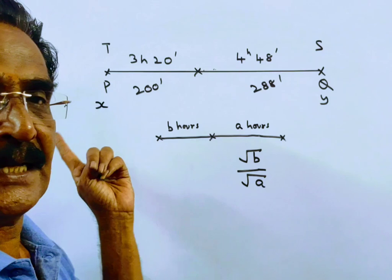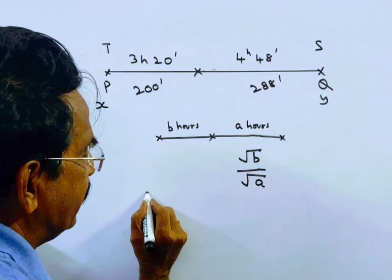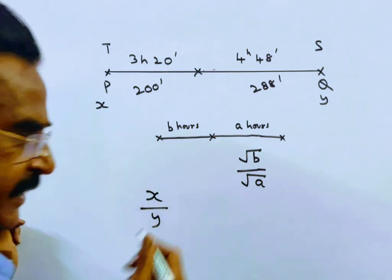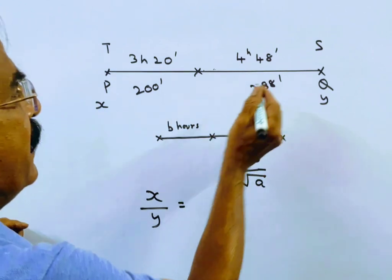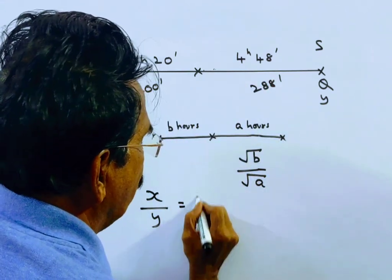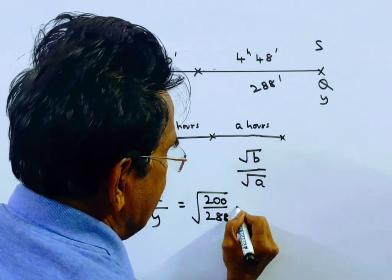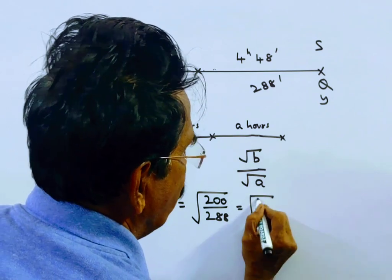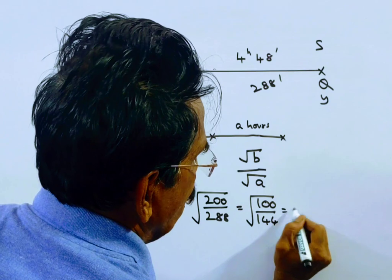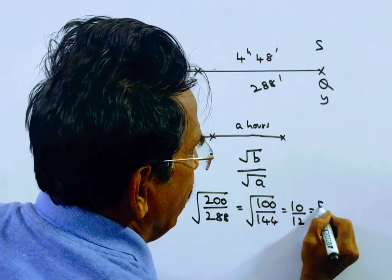Say the speeds of P and Q are X and Y respectively. Then we get the ratio of the speeds, that is X by Y is equal to root B to root A. This is A, this is B. Root of 200 upon 288, that is equal to root of 100 by 144, that is equal to 10 by 12, that is equal to 5 by 6.